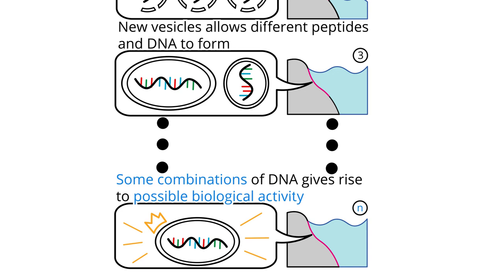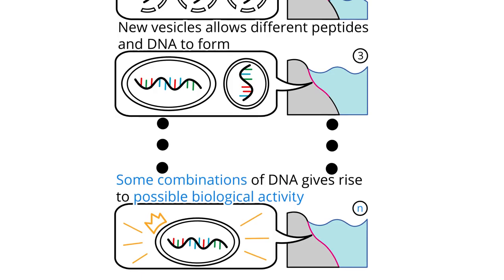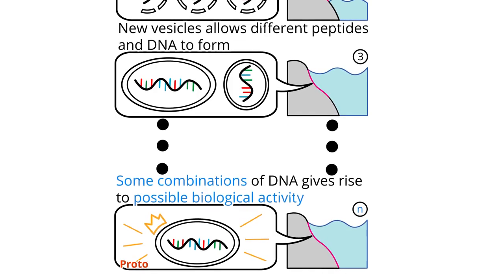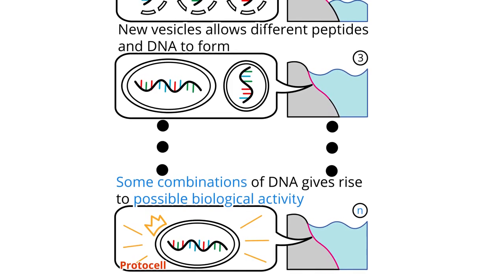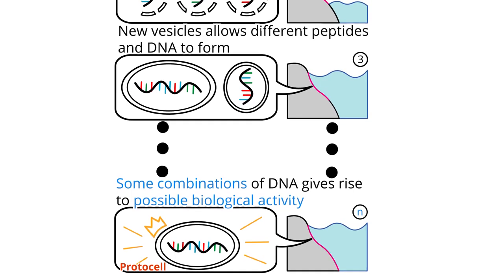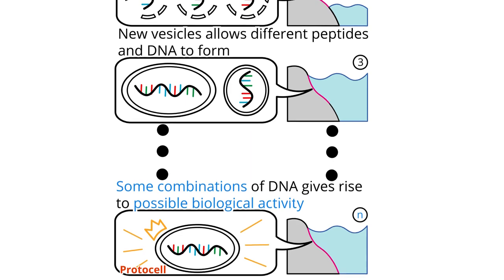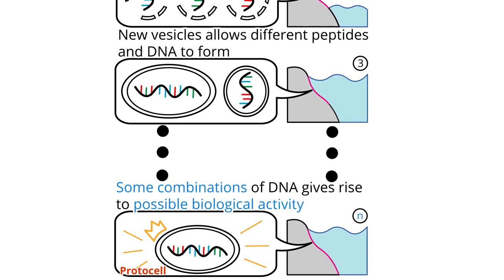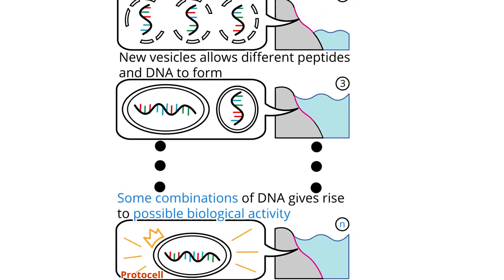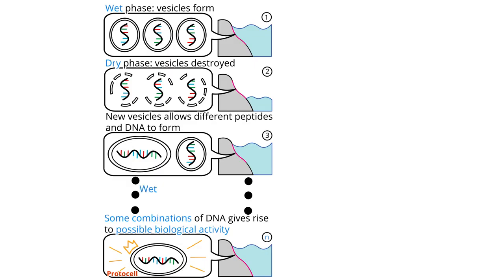Eventually, this might lead to something called a protocell, which is a primitive type of cell that originally arose for the evolution of modern-day biological cells. Thus, the researchers hypothesize that these cycles of wet and dry could have originally initiated Darwinian evolution, and eventually, life as we know it today.